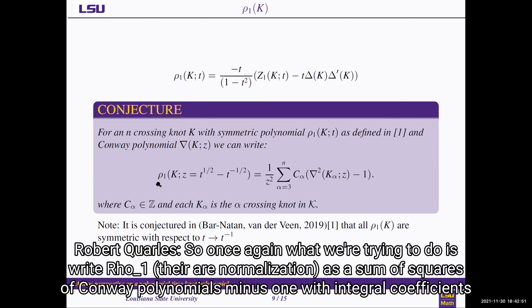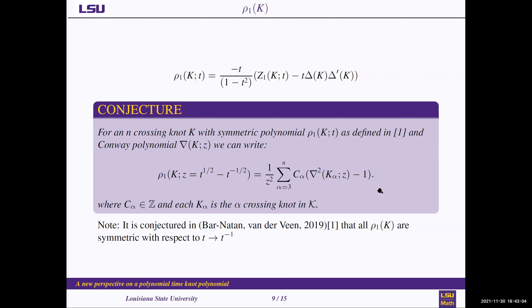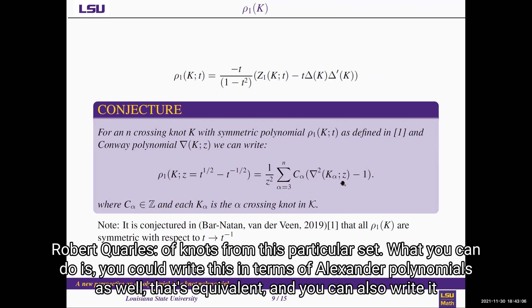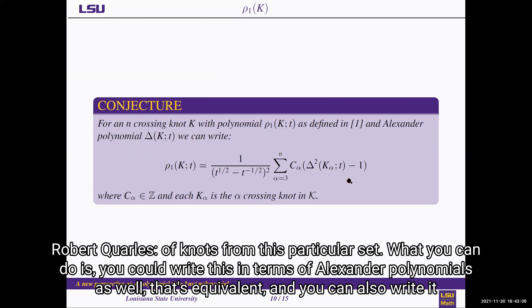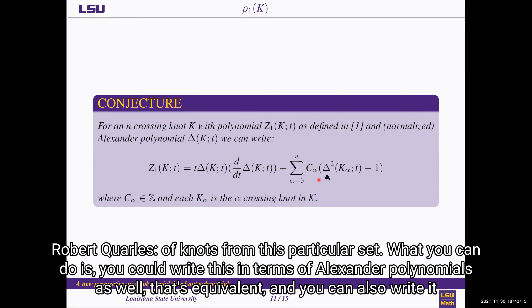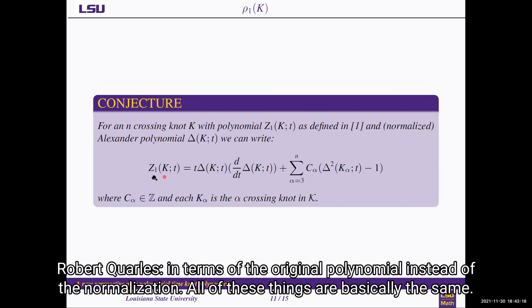So once again, what we're trying to do is write ρ_1, their normalization, as a sum of squares of Conway polynomials minus one with integral coefficients of knots from this particular set. And what you can do is you could write this in terms of Alexander polynomials as well. That's equivalent. And you can also write it in terms of the original polynomial instead of the normalization. All of these things are basically the same.